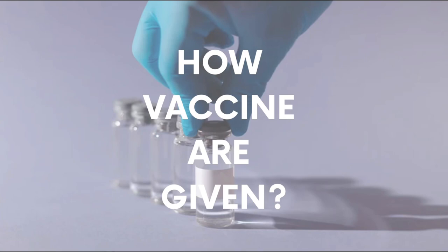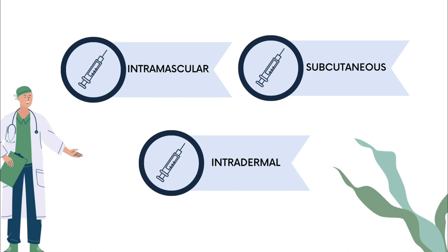Now we move to the next section, which is how vaccines are given. We have listed three ways vaccines are given. The first is intramuscular, which uses an inactivated vaccine injected into the muscle layer of tissue at a 90-degree angle.